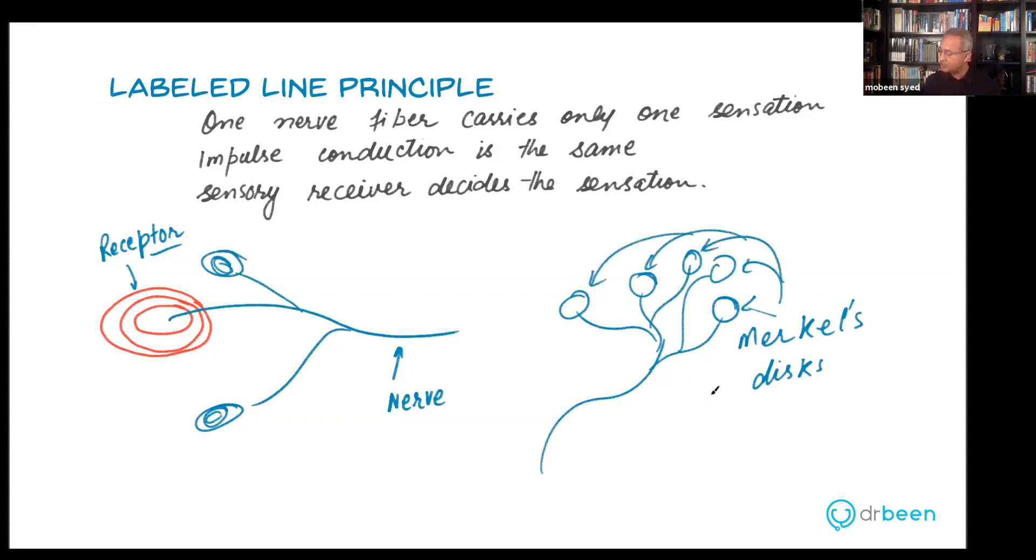You cannot say that all of these are Merkel and I had a Pacinian corpuscle attached here as well to this nerve. That is not going to happen. So because that's not going to happen, you can label this nerve for Merkel's corpuscles. Merkel's corpuscles are for low velocity touch. So these are touch.